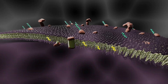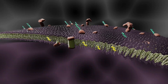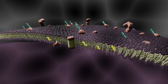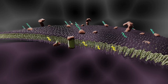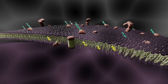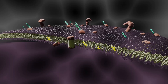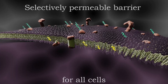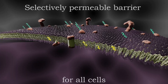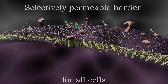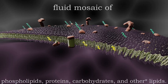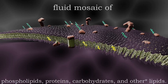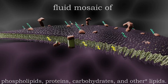Today we're talking about the plasma membrane — specifically its structure — and in future videos we'll talk about some of its many functions. The plasma membrane is a selectively permeable barrier for all cells and is a fluid mosaic of phospholipids, proteins, carbohydrates, and lipids.